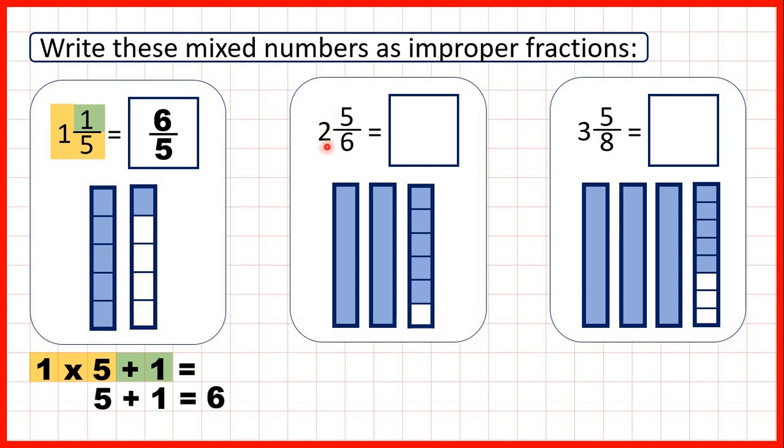Now we have 2 and 5 sixths. Again the denominator is going to stay the same, and we need to multiply the whole number by the denominator, so multiply 2 by 6 and then add 5. 2 times 6 is 12, and 12 plus 5 is 17. So that's our numerator.